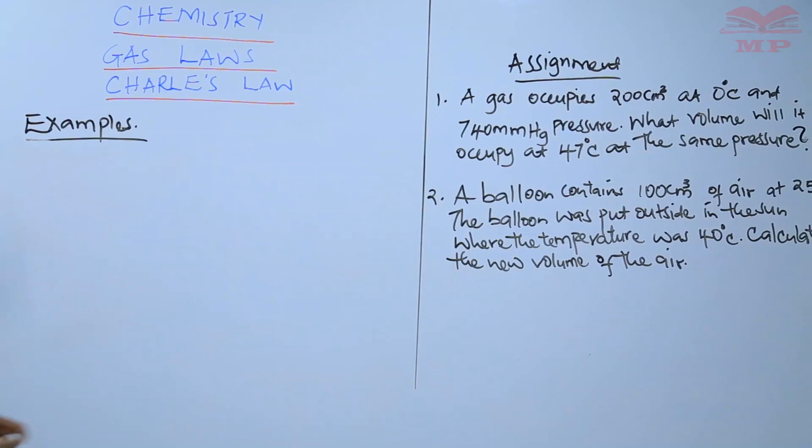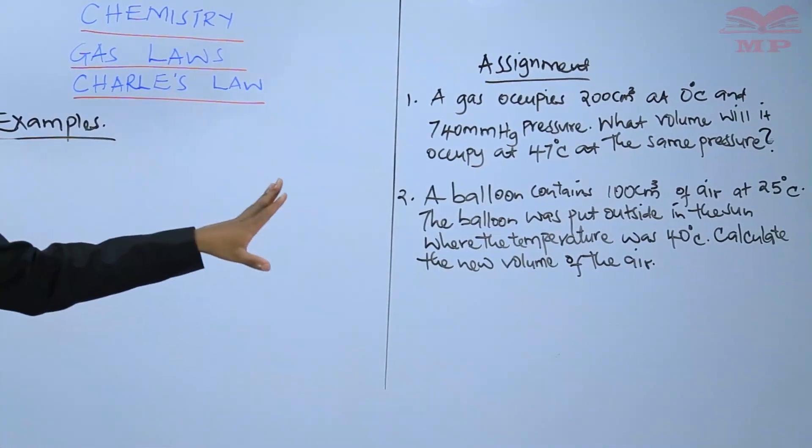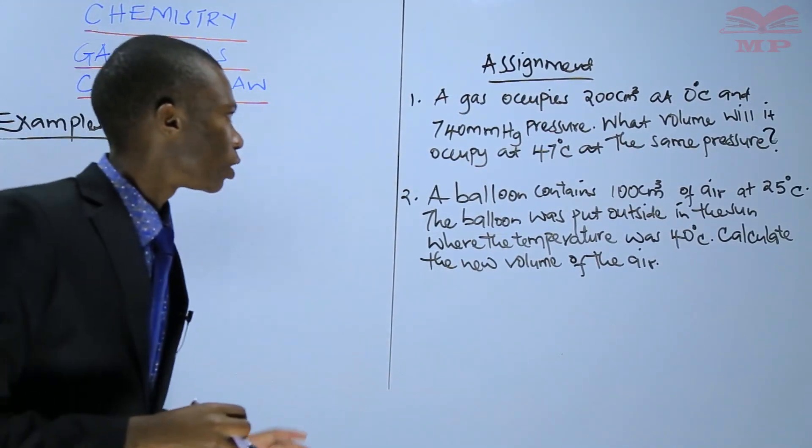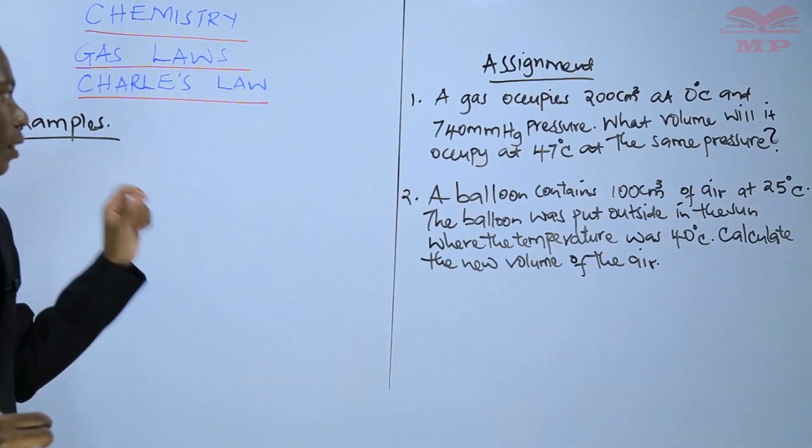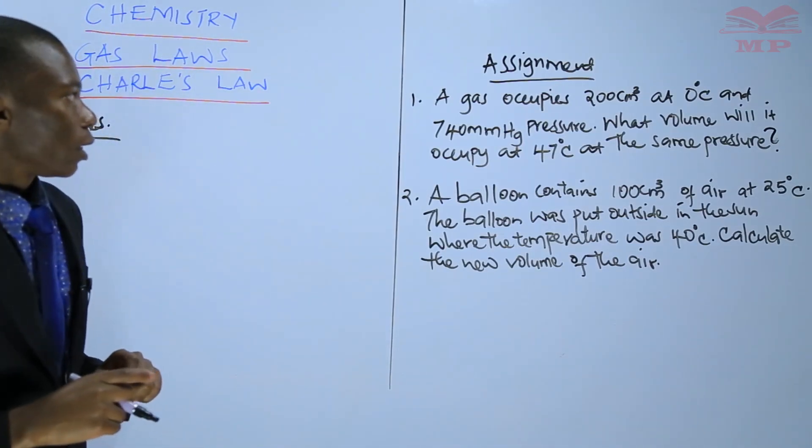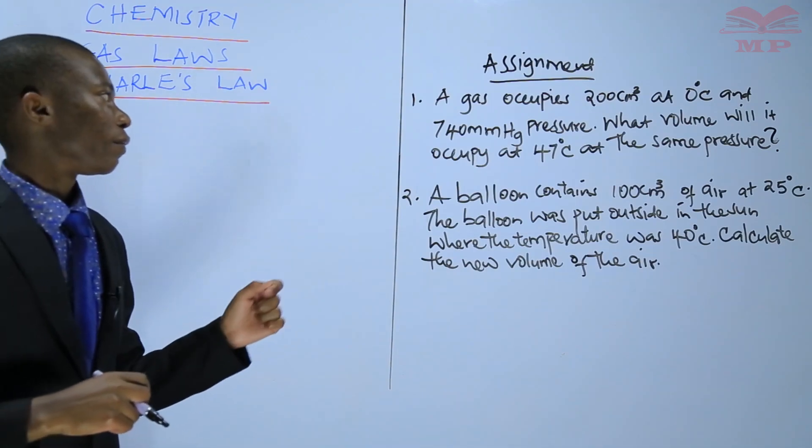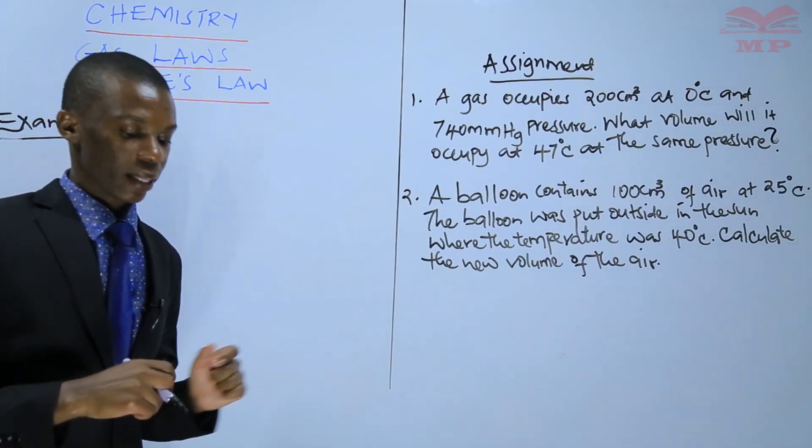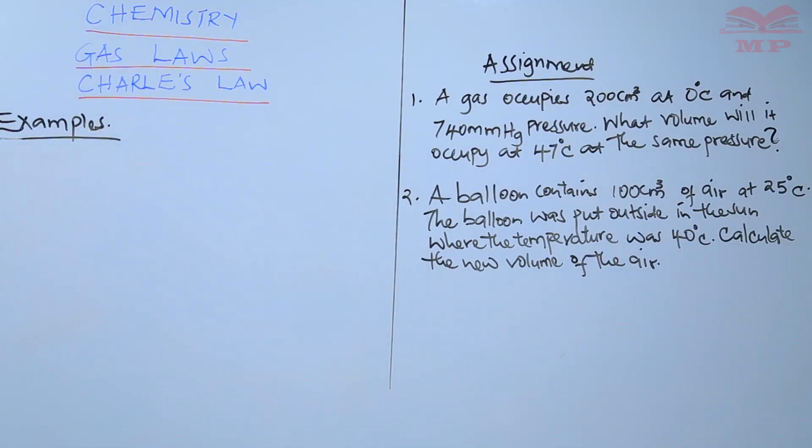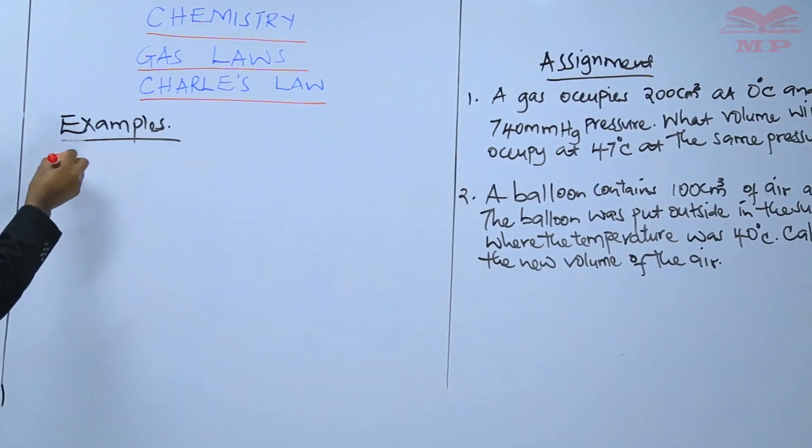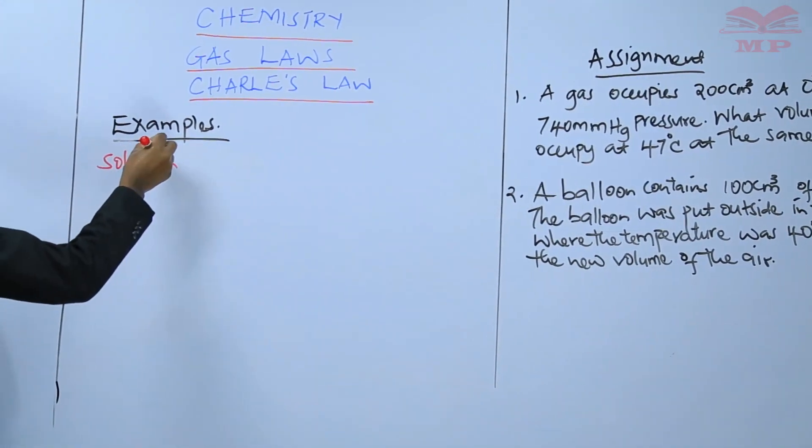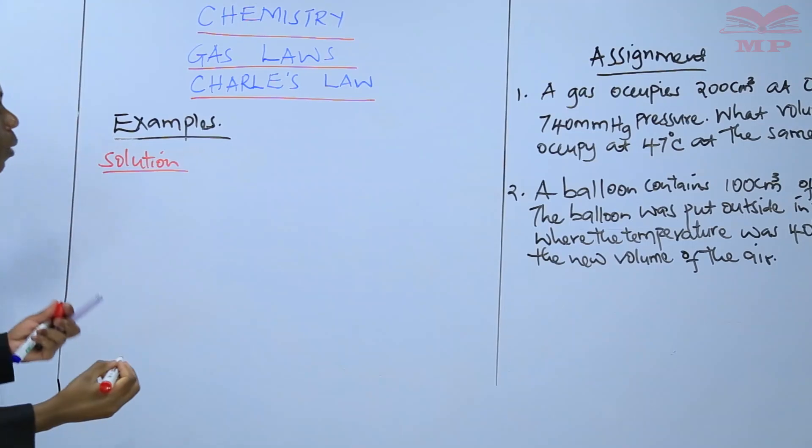The first one was a gas occupies 200 centimeters cubed at zero degrees Celsius and 740 millimeters of mercury pressure. What volume will it occupy at 47 degrees Celsius at the same pressure? This is how you're supposed to go about it.